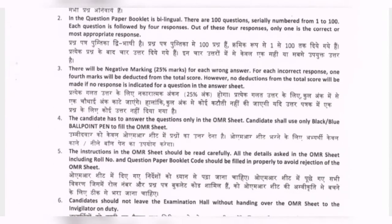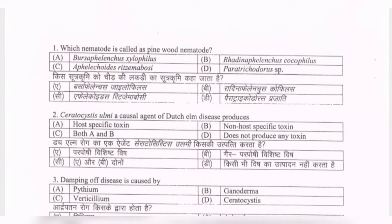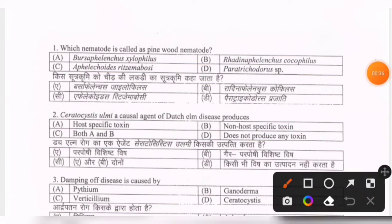The first question: which nematode is called as pinewood nematode? Options are Bursaphelenchus xylophilus, Rhadinaphelenchus cocophilus, Aphelenchoides ritzema-bosi, and Paratrichodorus species. The correct option is the first one — Bursaphelenchus xylophilus.